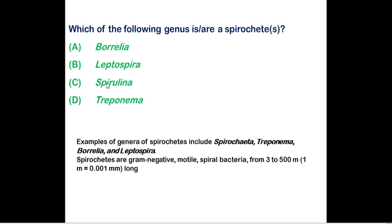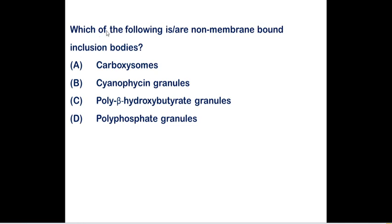Which of the following genera are spirochetes? Spirochetes are gram-negative, motile, spiral-shaped bacteria. Examples include Spirochaeta, Treponema, Borrelia, and Leptospira. Option A, option B, and option D are all correct. Spirulina, however, is considered an alga, not a spirochete. Since this is a multiple-select question, you should select all three correct options.